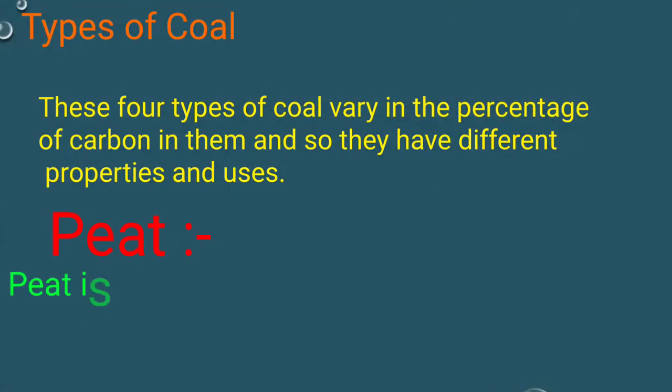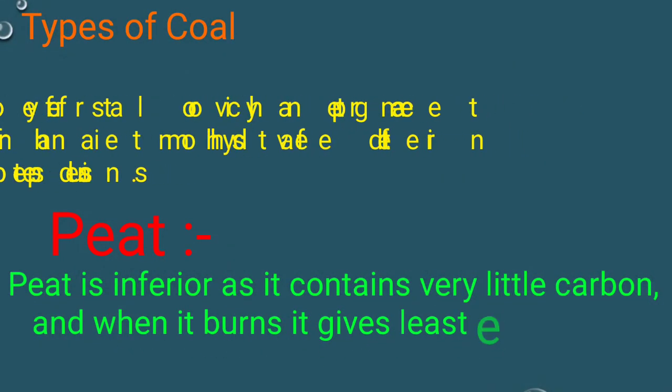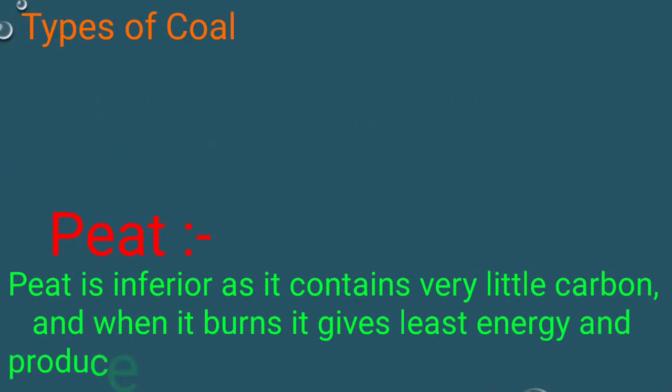Peat is inferior as it contains very little carbon. When it burns, it gives the least energy and produces a lot of smoke.